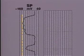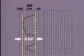The value of the static SP can be found by drawing a line through the SP opposite the thick permeable formation, and another line through the SP opposite the intervening shale beds. The difference in millivolts between these two lines is the static SP.